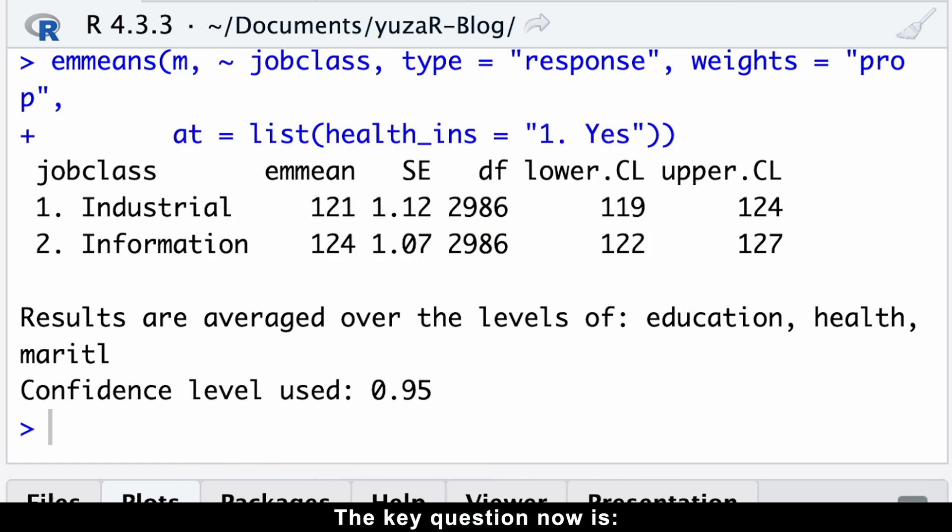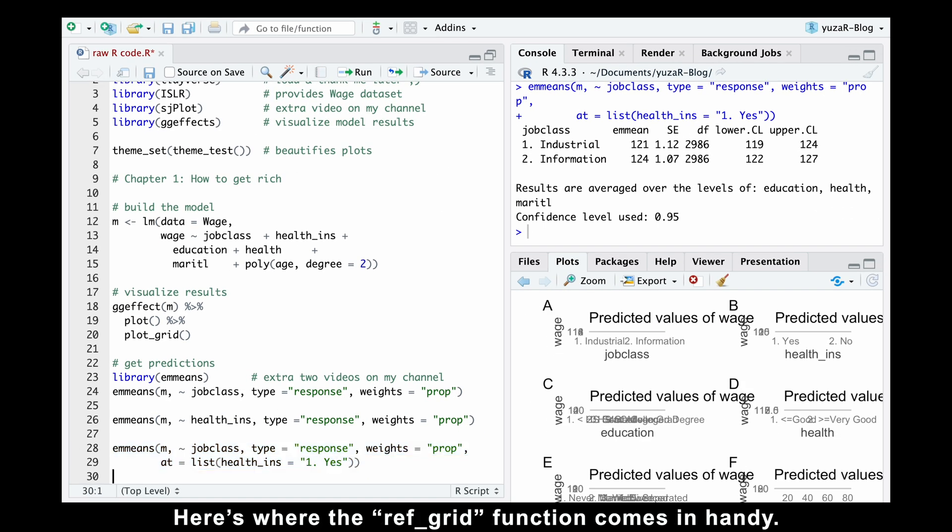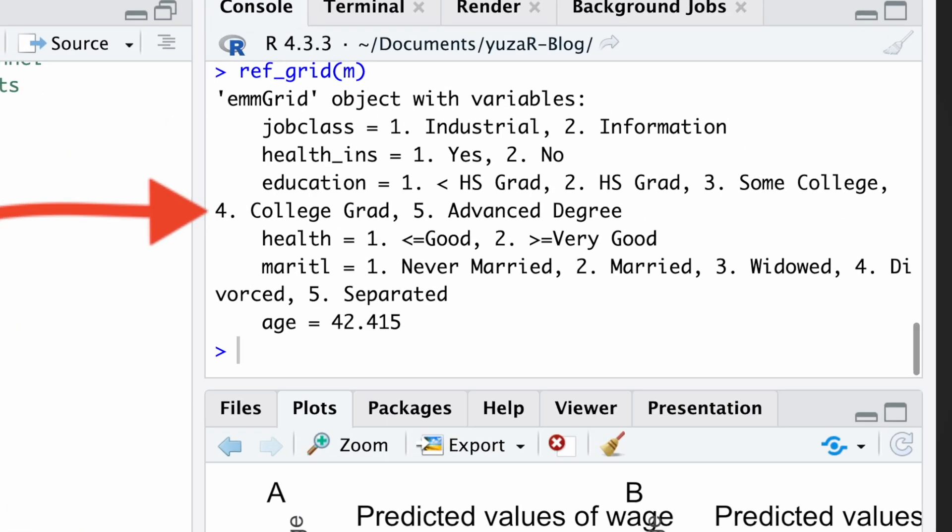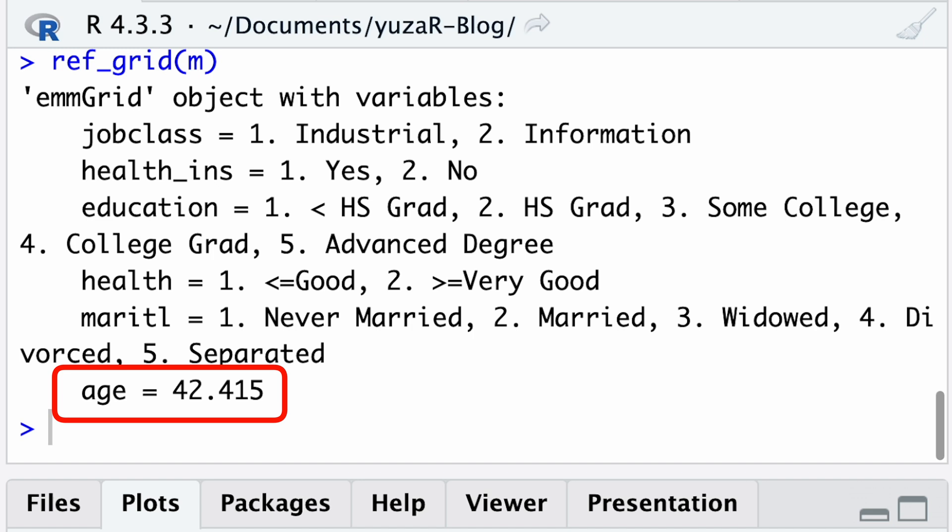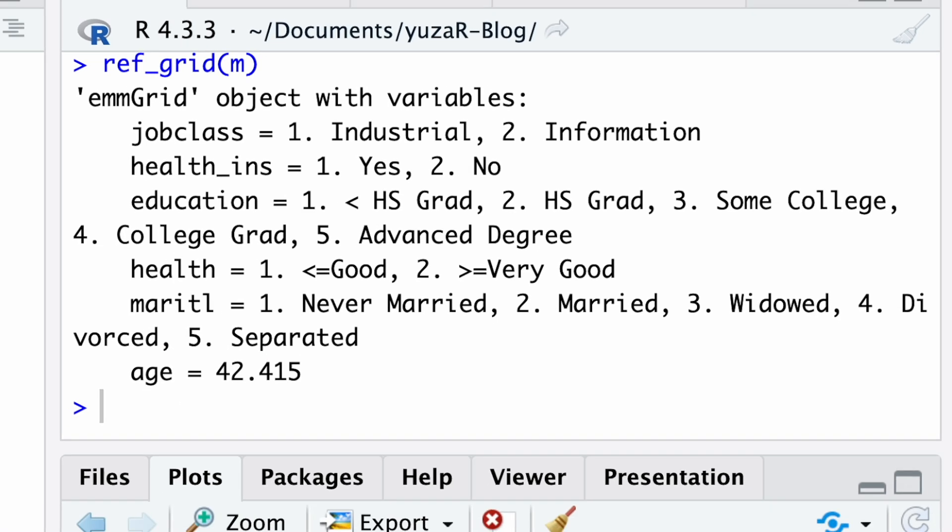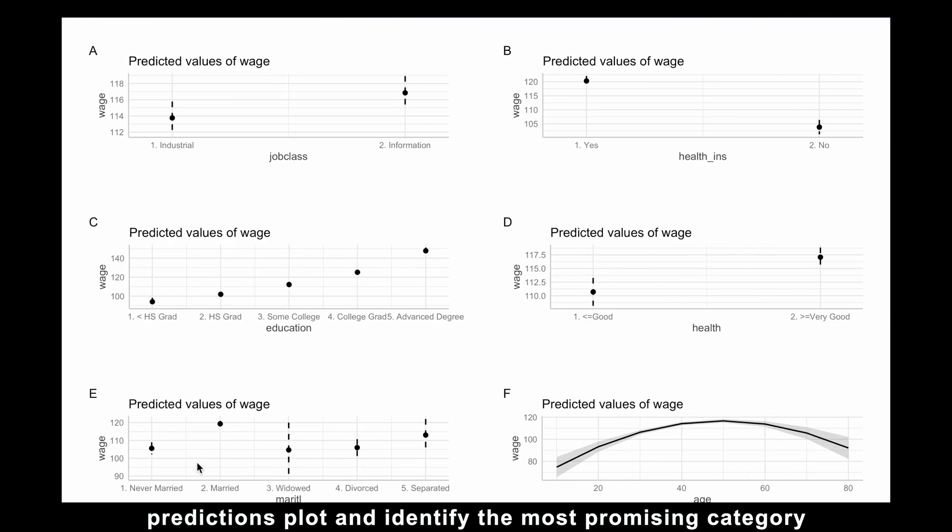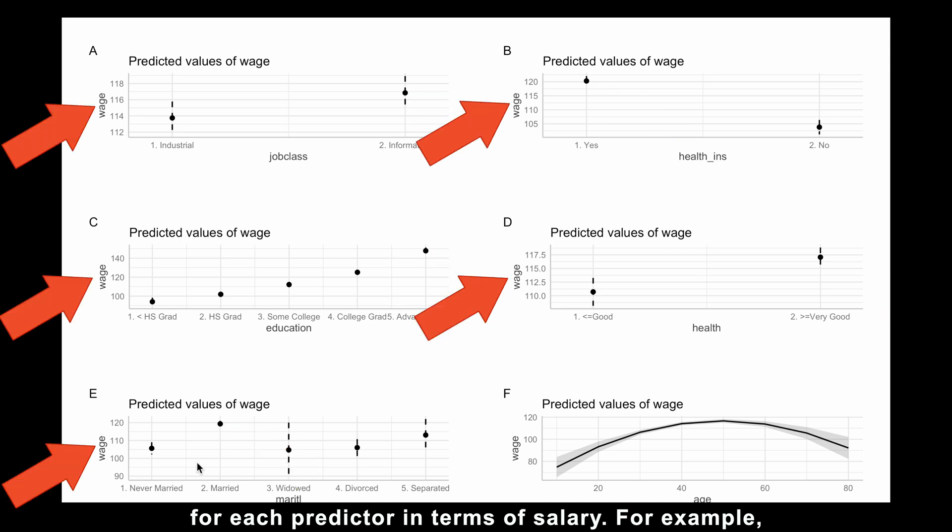The key question now is how do we know what questions to ask the model? Here is where the RefGrid function comes in handy. It provides a helpful overview by showing all possible levels of the categorical predictors and the average values for the numeric predictors like age. With this information from RefGrid, we can revisit our predictions plot and identify the most promising category for each predictor in terms of salary.